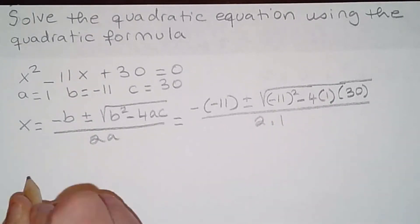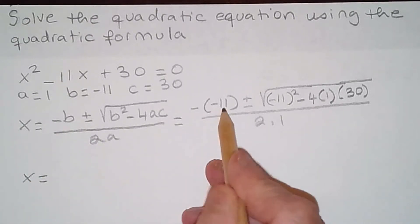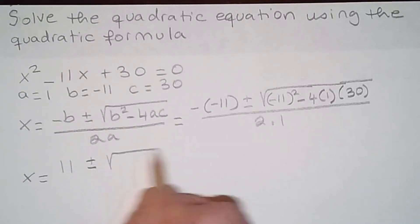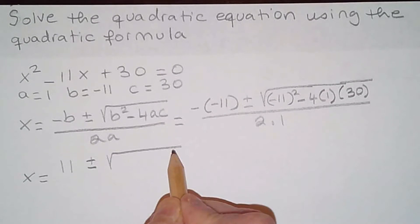So x then becomes equal to negative times a negative, that's a positive 11, plus or minus square root, 11 squared is equal to 121...